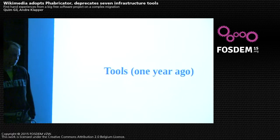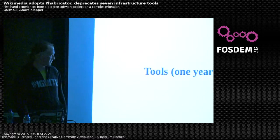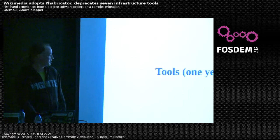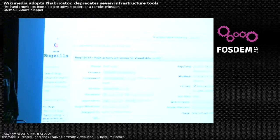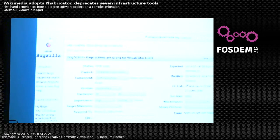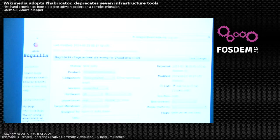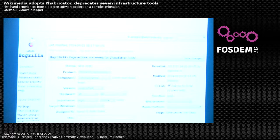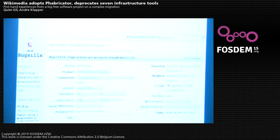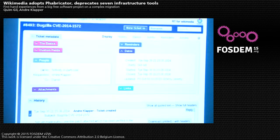About one year ago, the main tool was a Bugzilla instance — you can see a bug report here with lots of interesting UI fields. Who has used Bugzilla before? Next one is RT — RT was mostly used by the operations team at the Wikimedia Foundation.